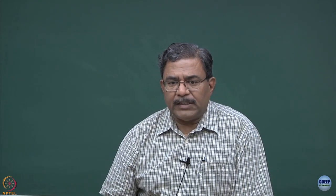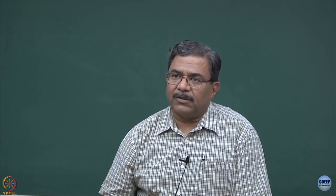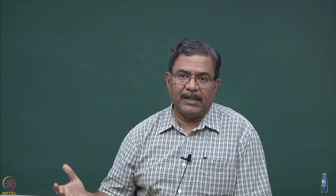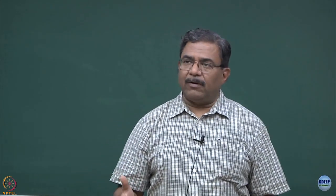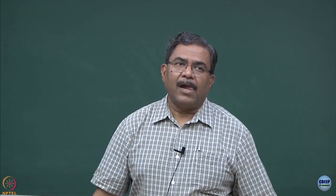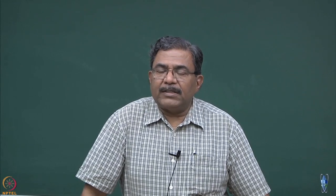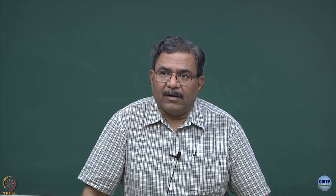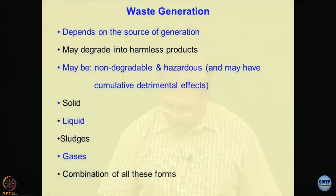The source of generation of this material mostly comes from industries or municipalities. The material's toxicity depends upon where it is generated — industrial wastes are generally more toxic compared to municipal waste because of the level of activities involved. Another interesting aspect is that waste may degrade into harmless products, or sometimes into harmful products. Waste could be hazardous and non-degradable, and depending on cumulative detrimental effects, it might become very critical to handle.